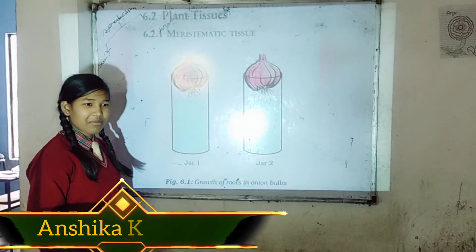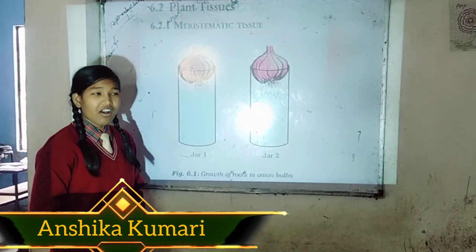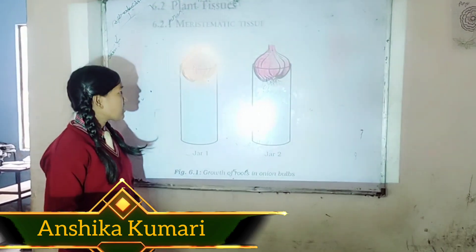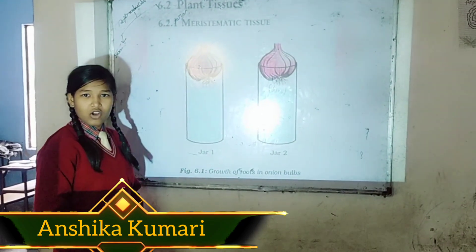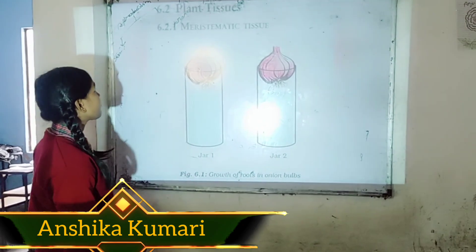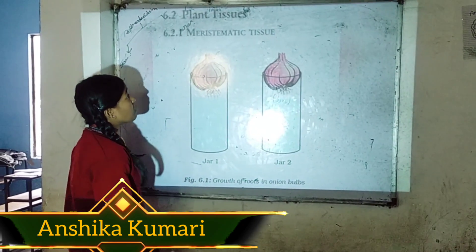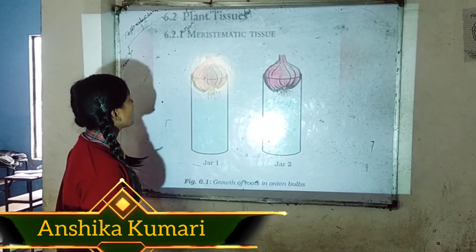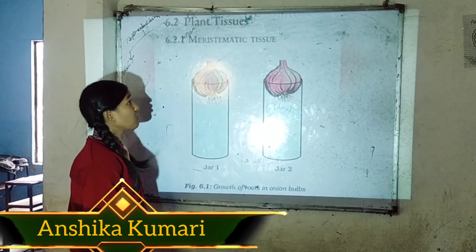Hello everyone, I am Mr. Karid. In class 9th, today's scientific presentation is given by Borosan. The topic is Tissue. Tissue has two types: plant tissue and animal tissue.